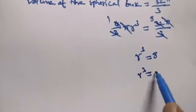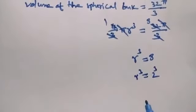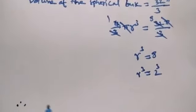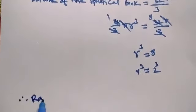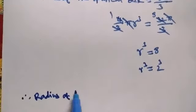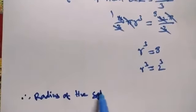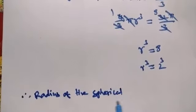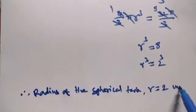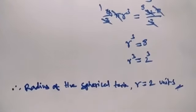Since r³ = 8 and 2³ = 8, we have r³ = 2³. Therefore, the radius of the spherical tank is r = 2 units.